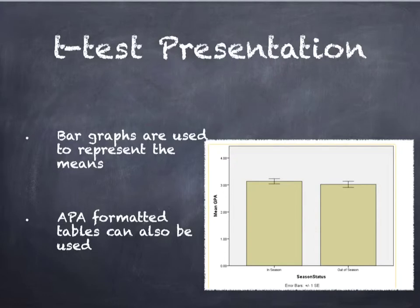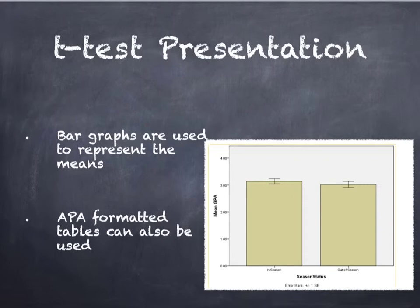When students present results, bar graphs are probably the best visual for a t-test poster. The bars should be appropriately labeled for each group, with means on the y-axis, and ideally include standard deviation or standard error bars to show the mean plus or minus a standard deviation. That concludes the t-test lecture — move on to video four for correlations and chi-squares.